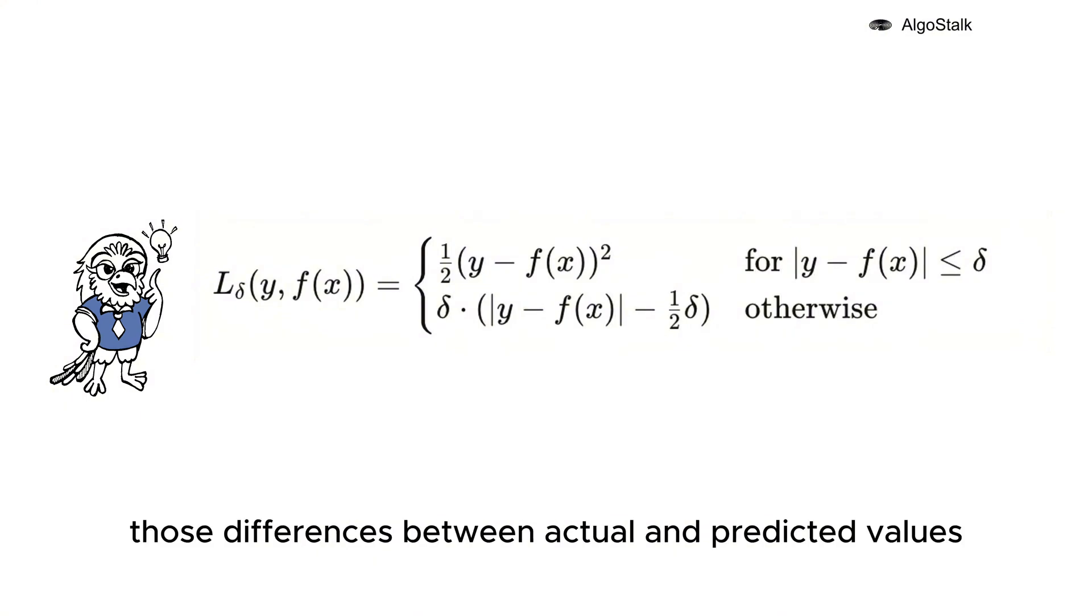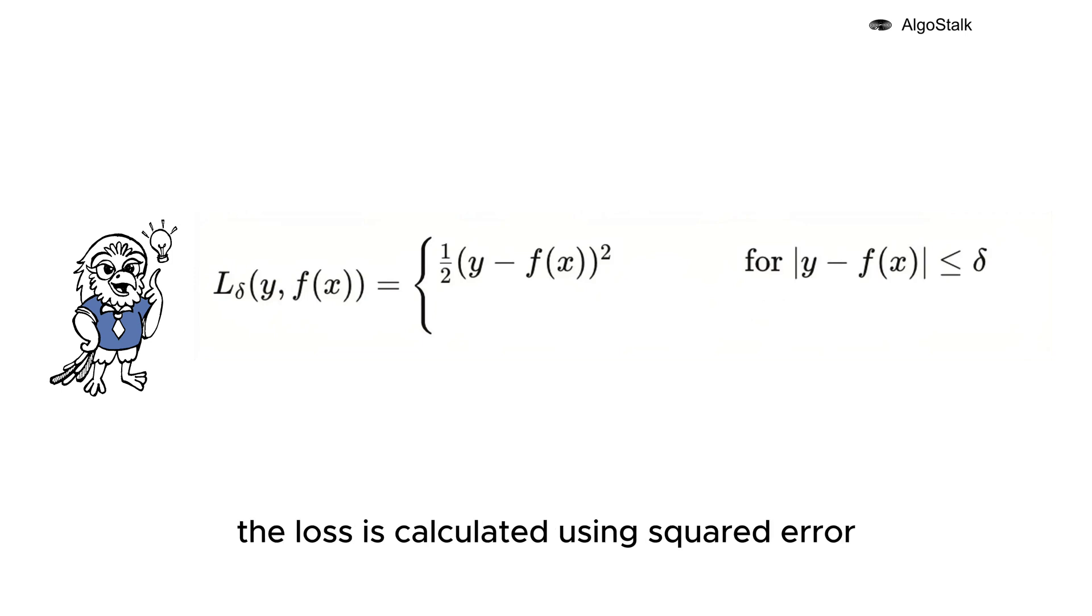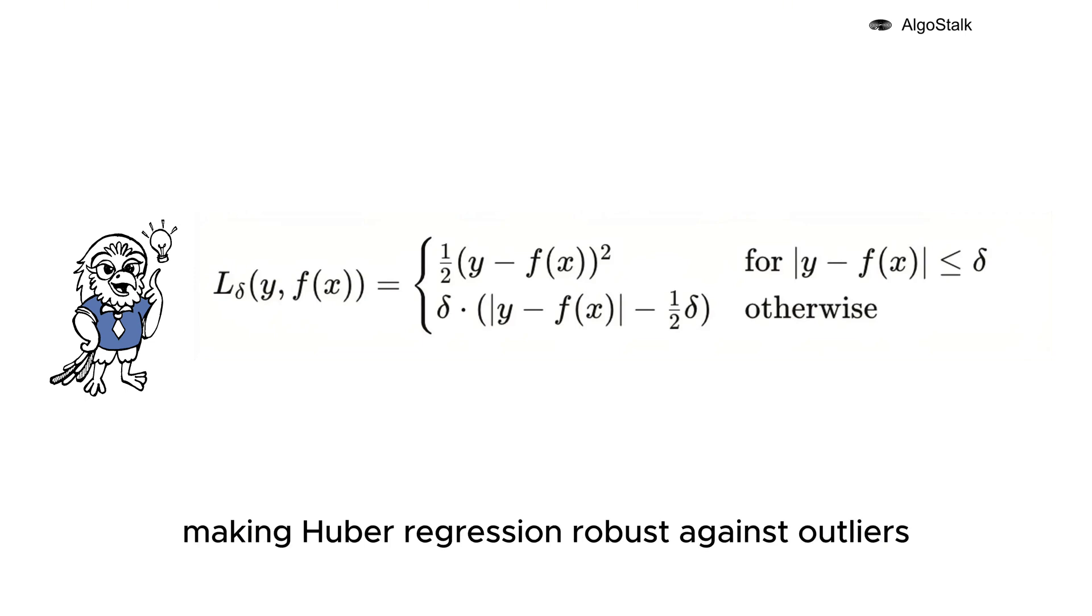In this formulation, for residuals (those differences between actual and predicted values) that are within the range of delta, the loss is calculated using squared error. This means that small errors are treated with the same trust as they are in linear regression. However, for residuals larger than delta, the loss switches to absolute error, making Huber regression robust against outliers. This way it reduces the impact of those misleading clues that could otherwise throw us off track.